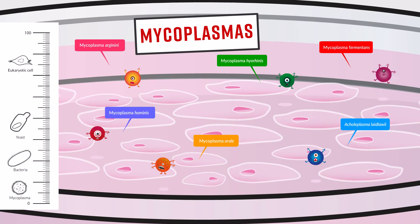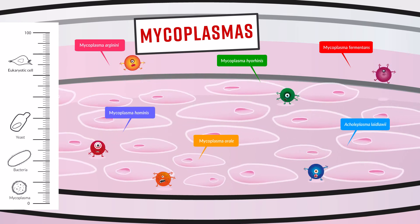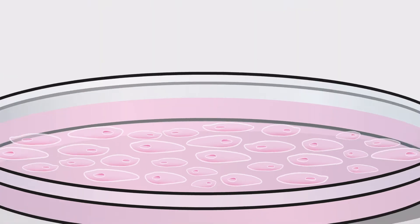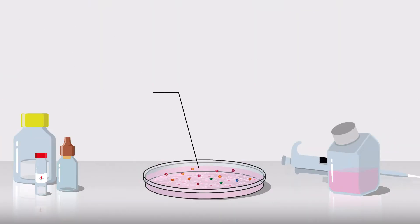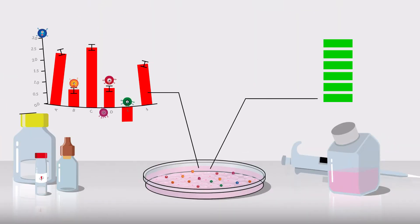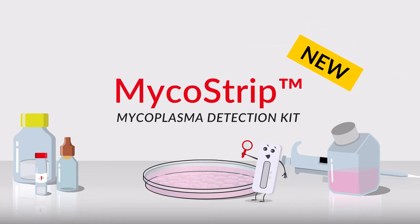95% of mycoplasma contamination is caused by just six species, and there are a number of possible sources. Mycoplasma contamination can cause many unwanted effects on your culture and lead to unreliable experimental results. The only way to confirm mycoplasma contamination is to perform specific testing, and InVision has the perfect product for you.